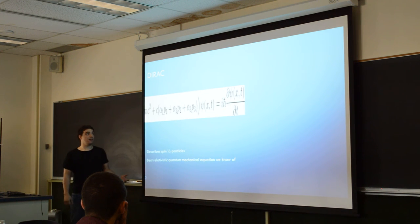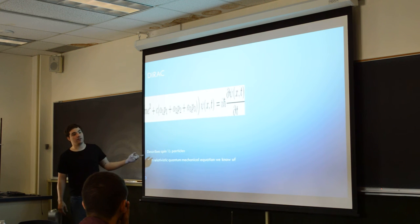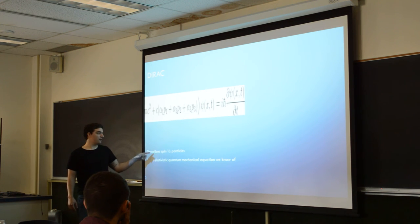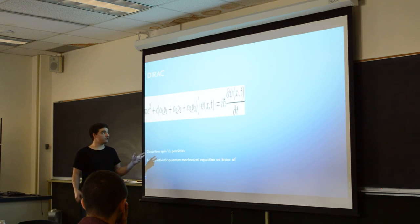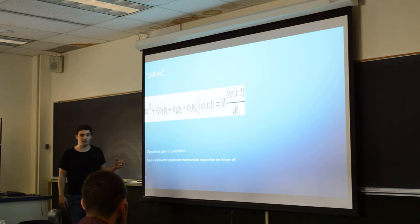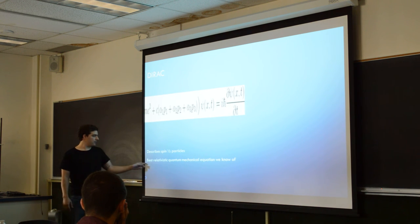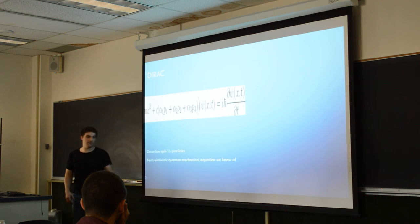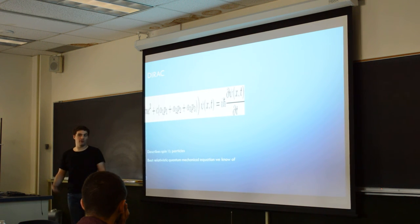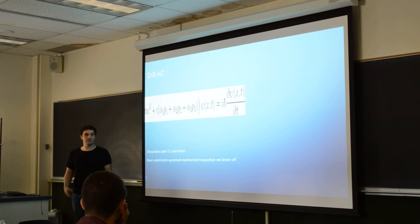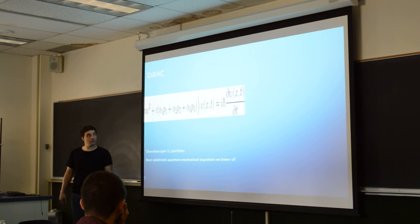Dirac went off the Klein-Gordon equation and he made it a first-order equation by using four vectors and these matrices and whatnot. It gets really complicated, so I'm not going to go into it, but it does describe spin, half-spin particles such as fermions. It's the best equation right now that we know of that can do relativity and quantum mechanics.